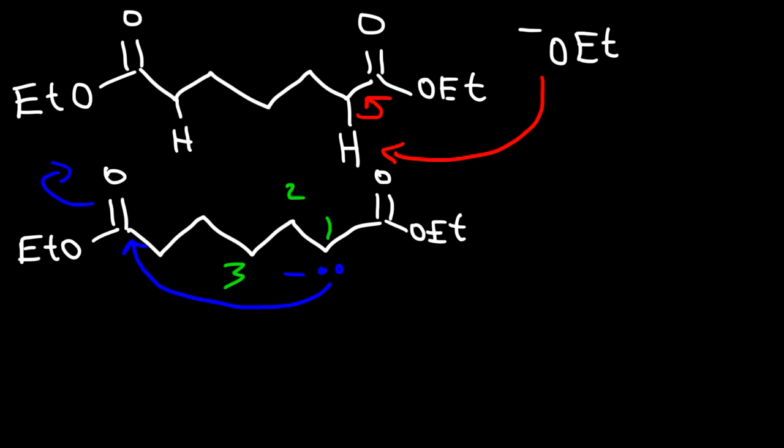The carbon with the negative charge will attack the carbonyl carbon on the other side, and we're going to get a six-membered ring. Whenever you have an intramolecular reaction, where the molecule reacts with itself, typically a ring is formed.